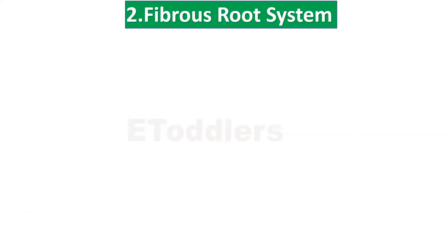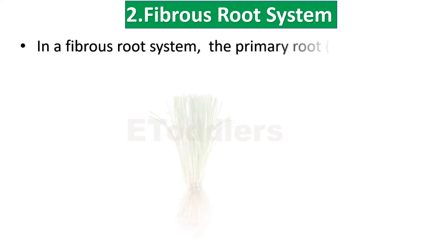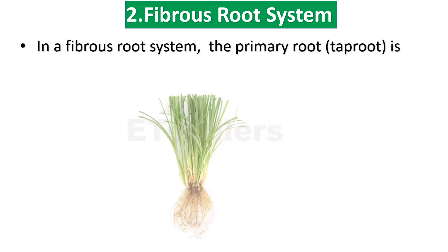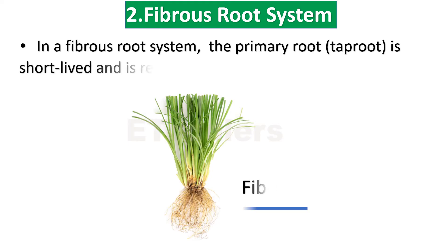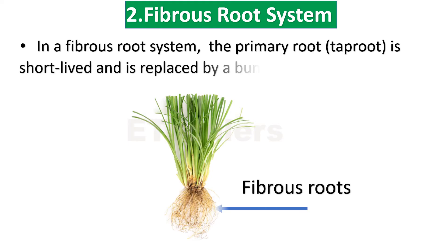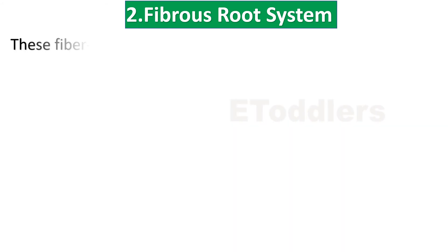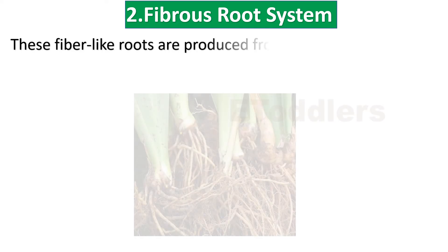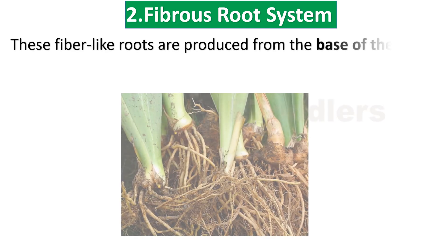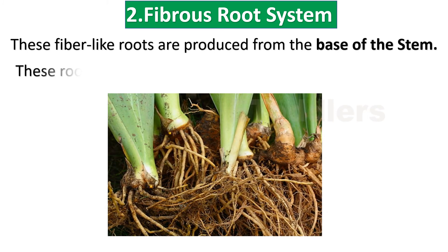Learn about the fibrous root system. In a fibrous root system, the primary root is short-lived and is replaced by a bunch of thin fiber-like roots. These fiber-like roots are produced from the base of the stem. These roots are called fibrous roots.